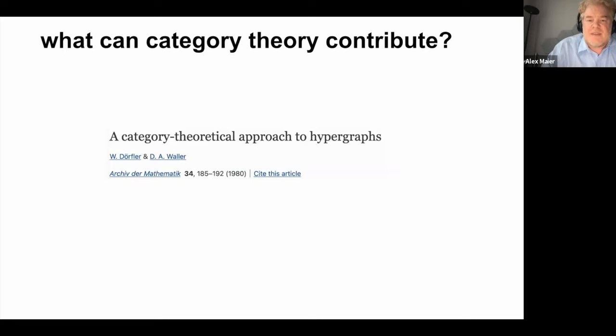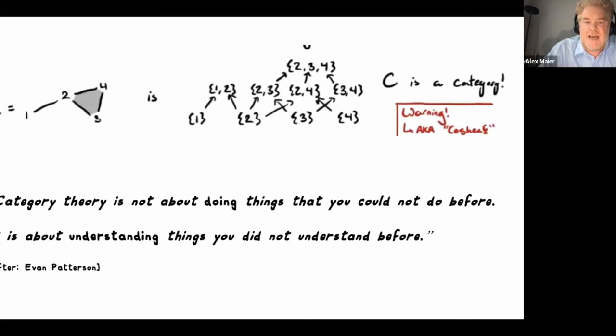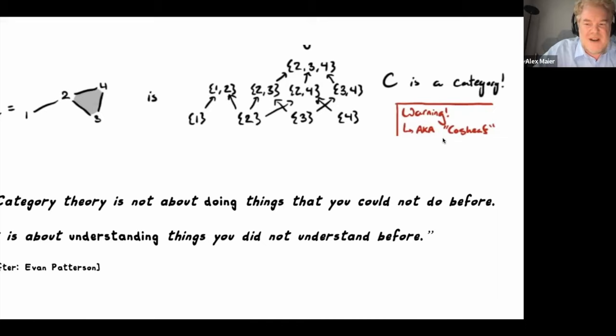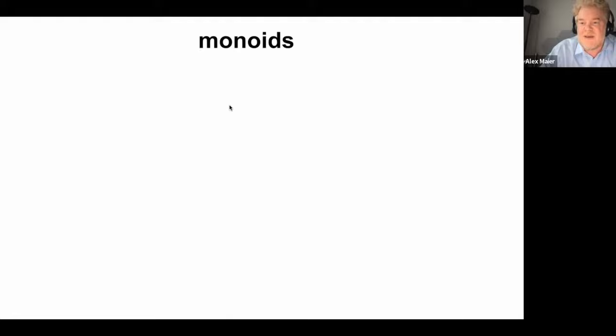So what about category theory? Why did I stumble into it? There are papers that connect category theory and hypergraphs. I like a slide I took from a talk by Evan Patterson: category theory is not about doing things you could not do before — it is about understanding things you did not understand before. When we look at certain commutative diagrams in category theory, we end up with what looks like a hypergraph, so there seems to be a connection already. I hope that by applying category theory, we can learn something by looking at things differently.